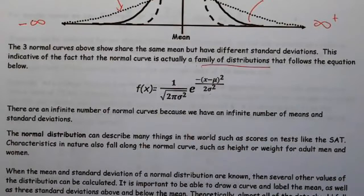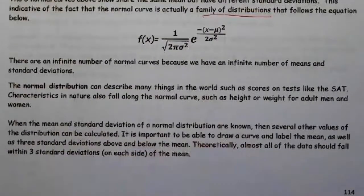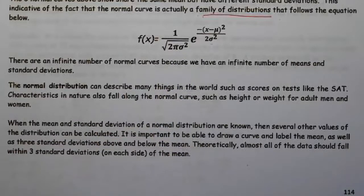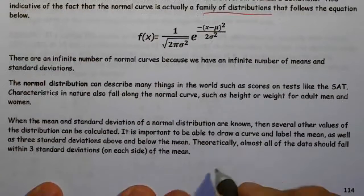So why is it powerful? Well, the normal distribution can describe many things in the world, such as scores on tests or things that happen in nature, such as height or weight for adult men and women. And when the mean and standard deviation of a normal curve are known, then several other values can be calculated. If we know the mean and the standard deviation, we can use this formula and integrate it to find out where you stack up, where you lie percentile-wise relative to everyone else. And this is an extraordinarily important concept here.